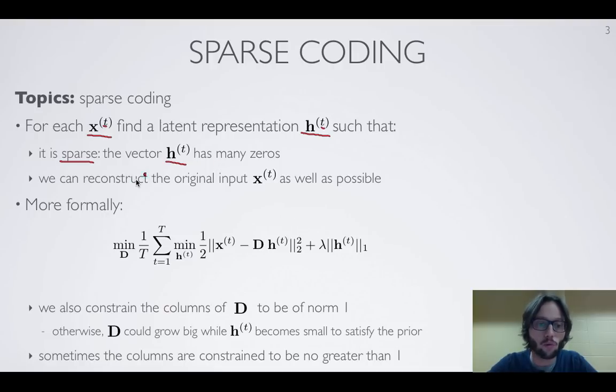We also want the representation to contain meaningful information about x(t). The way we're going to formulate that is that we want the latent representation to be able to reconstruct the original input as well as possible. We'll translate that into an objective function.